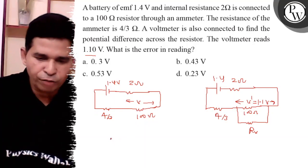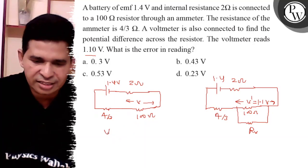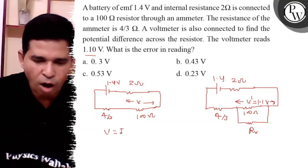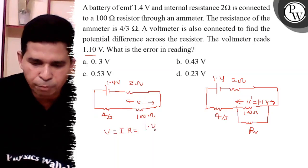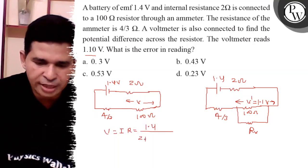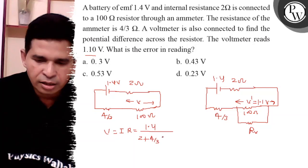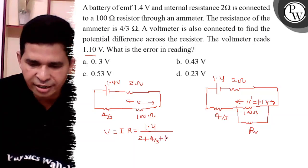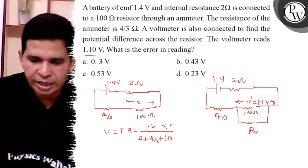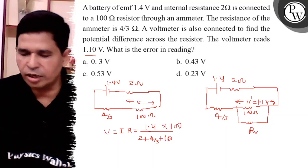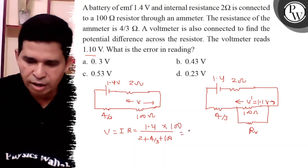So find the value of V. V is nothing but I into R. R is 100 ohm. I is 1.4 V divided by 2 plus 4/3 plus 100. The voltage drop across R is also 100, so it is 140 upon 103.33.